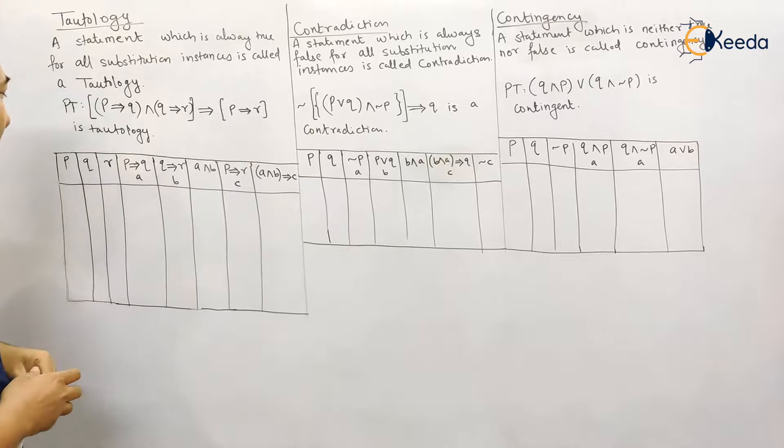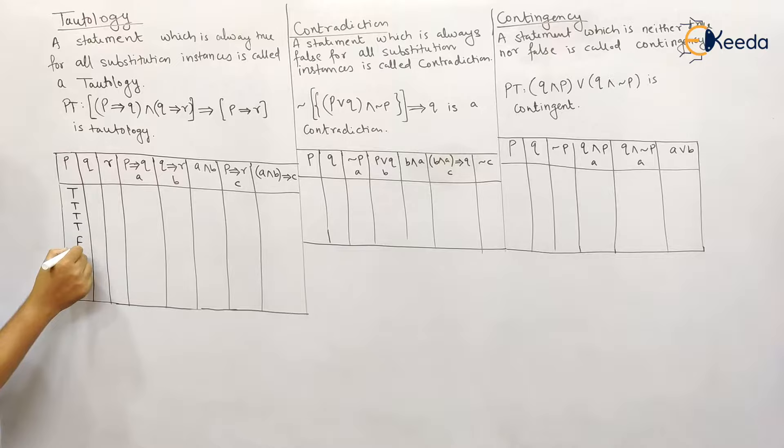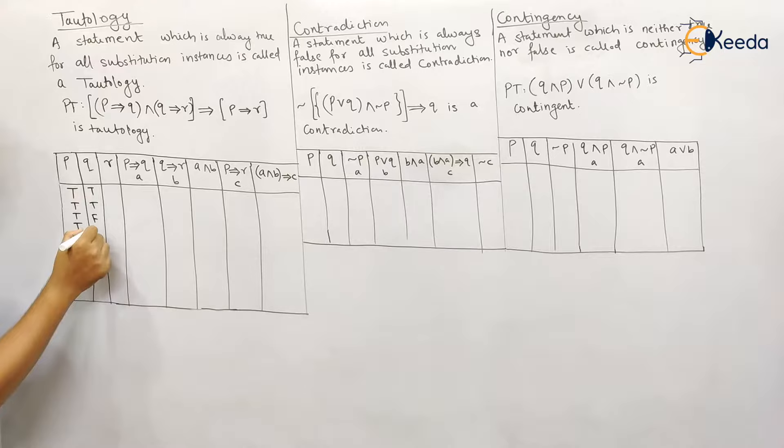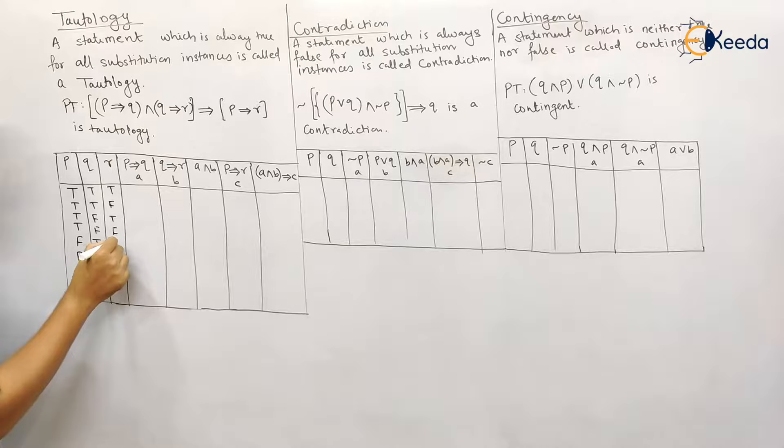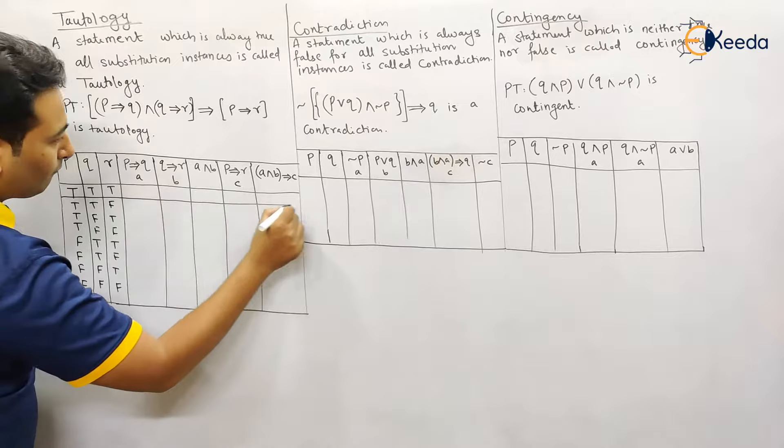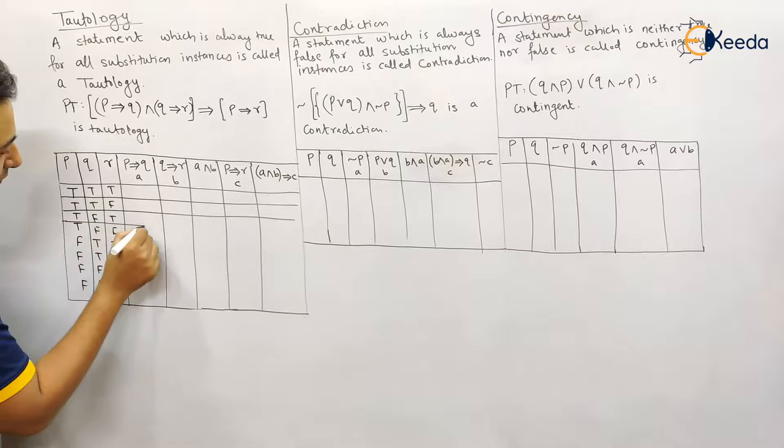To prove the first example, there are three terms: p, q, and r. Therefore 2 cubed — that is eight possibilities. So the first four rows are true then four false for p; two true two false for q; and finally alternating true and false for r. Let me draw a line so there will be no confusion.